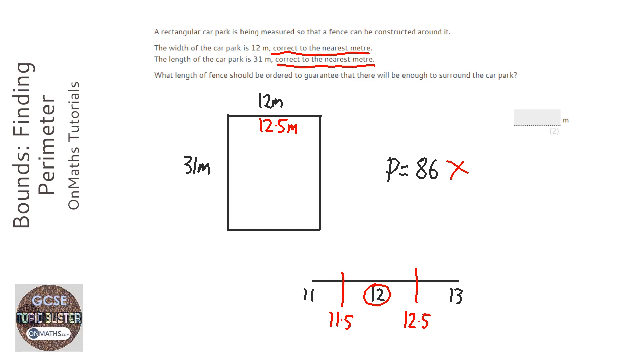Similarly with 31 metres, that could be 31.5 metres, worst case scenario. So to make sure, and where the question says how much fence should be ordered to guarantee that there will be enough, we're going to do 12.5 plus 31.5 plus 12.5 plus 31.5, and that is 88 metres.